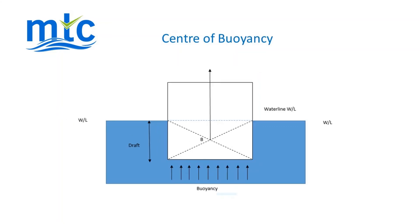To find the centre of buoyancy, draw diagonal lines from the waterline to the corners below the waterline and where they cross is the centre of buoyancy. The centre of buoyancy is the centre of the underwater volume of the vessel. It is the point through which the upthrust of the water surrounding the vessel may be considered to act.